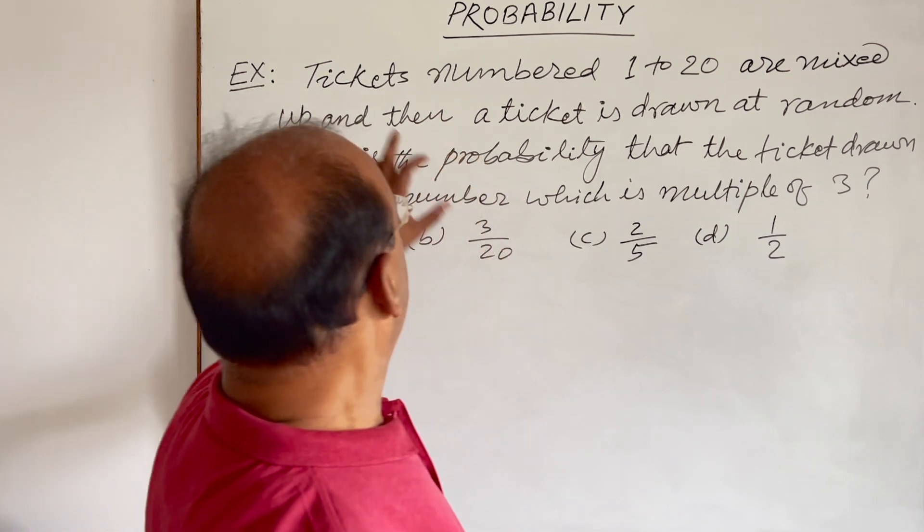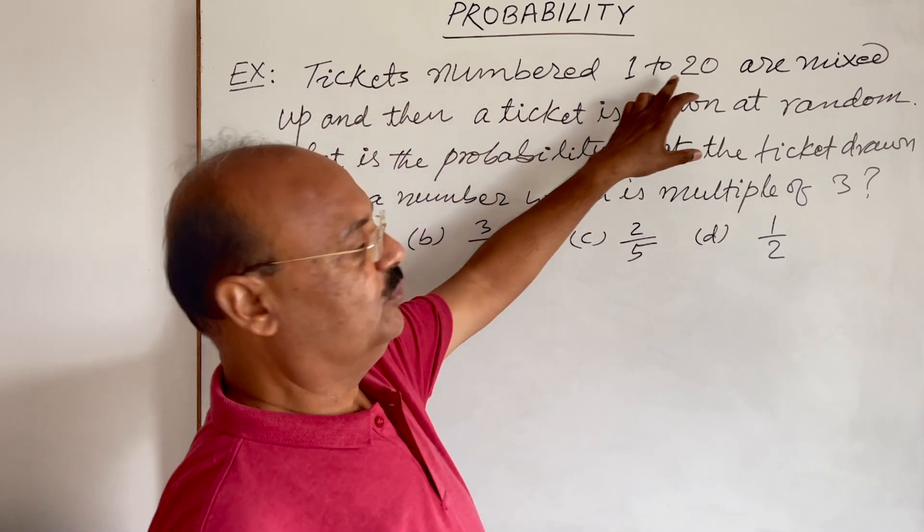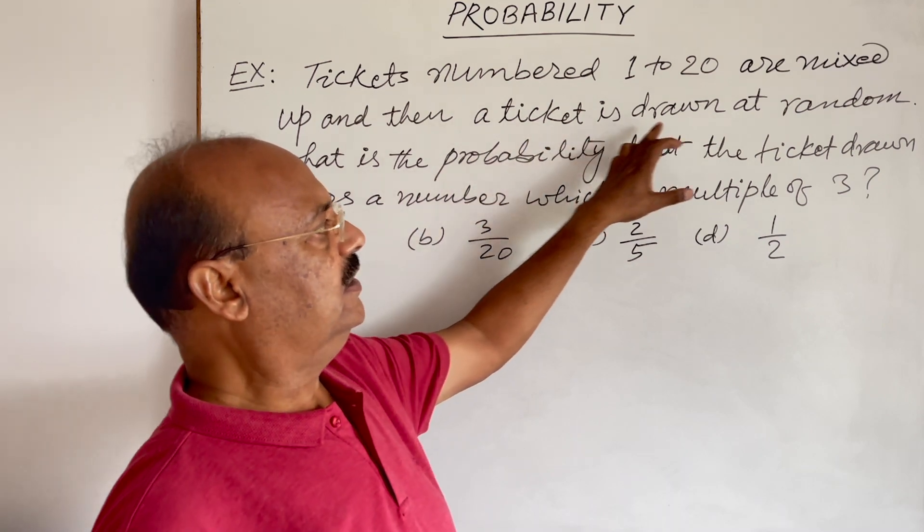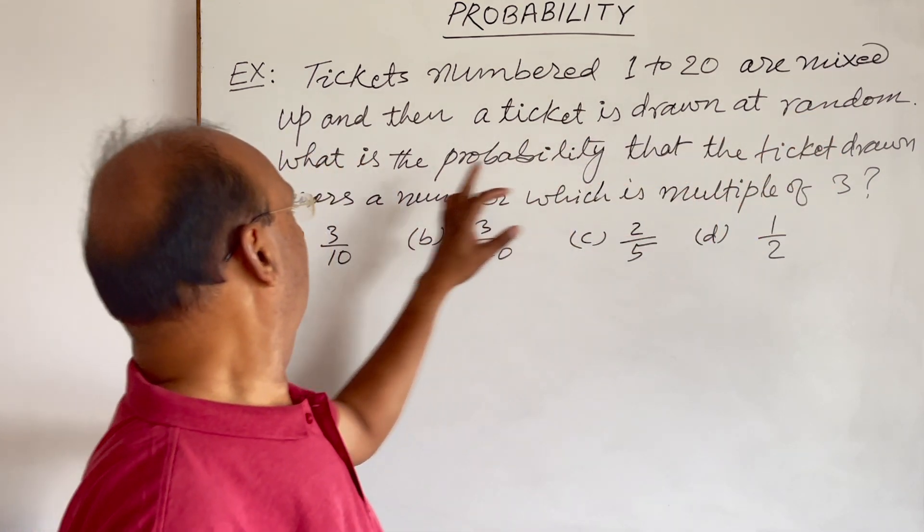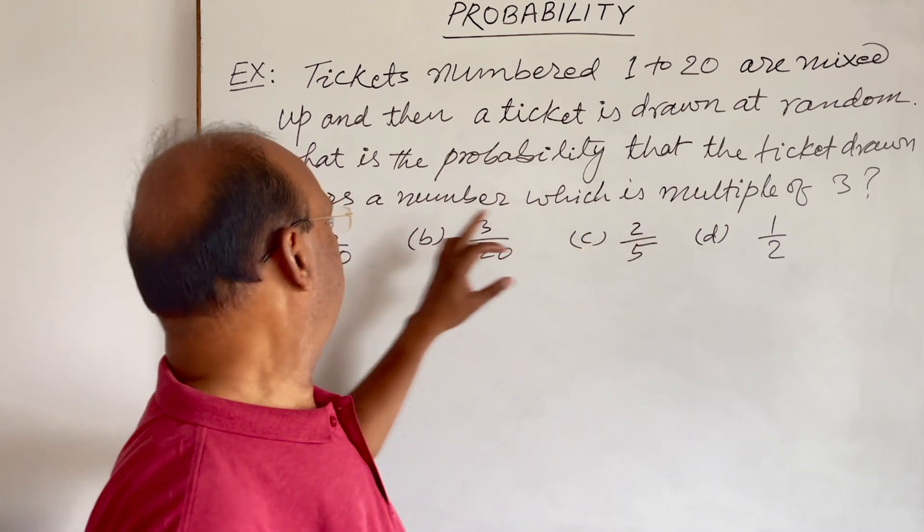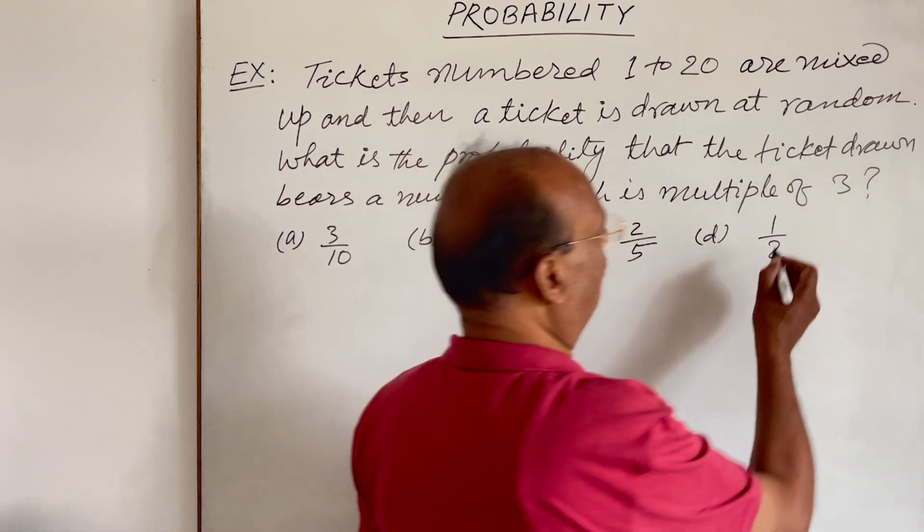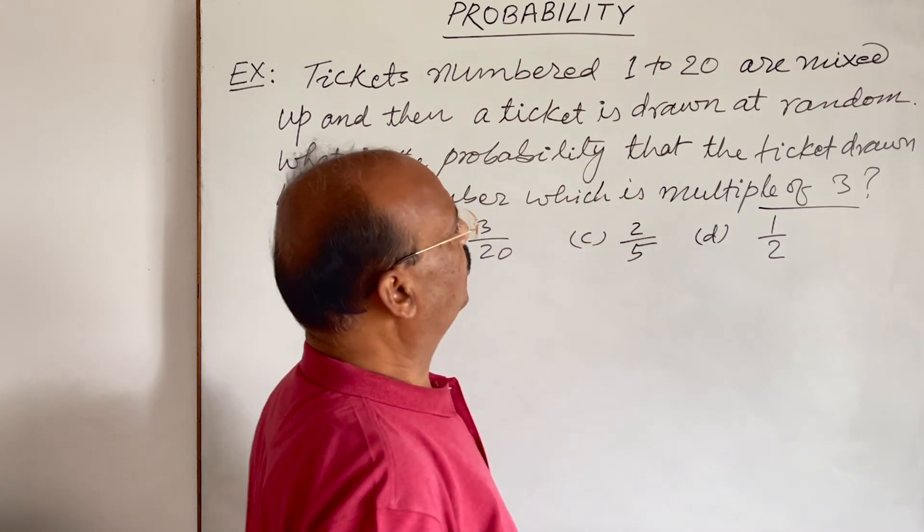The question is: tickets numbered 1 to 20 are mixed up and then a ticket is drawn at random. What is the probability that the ticket drawn bears a number which is multiple of 3?